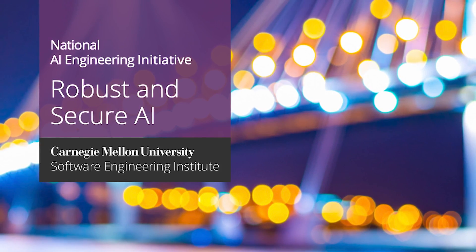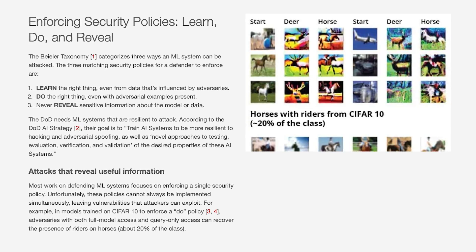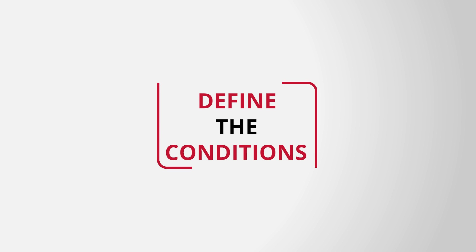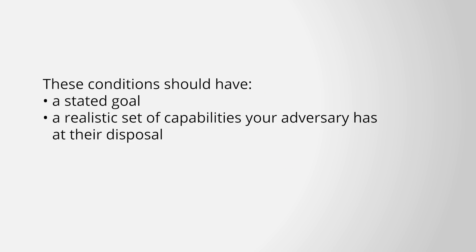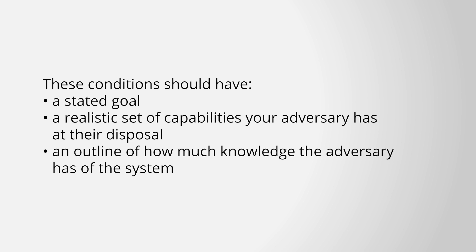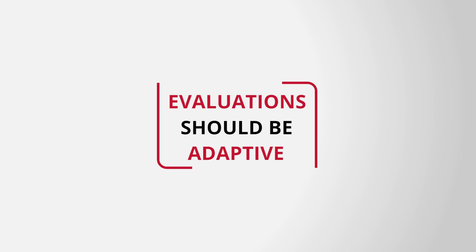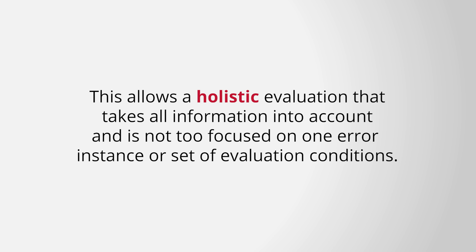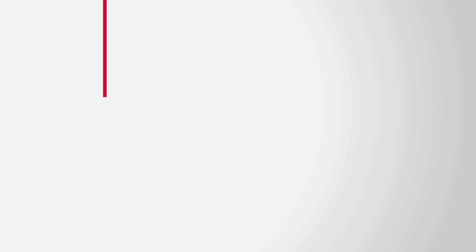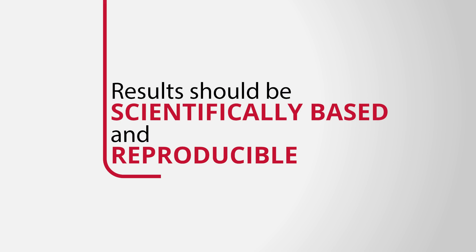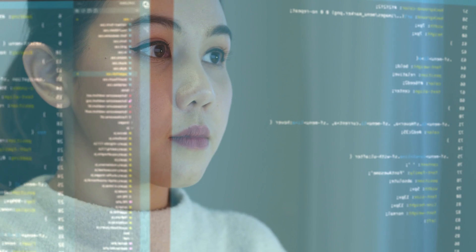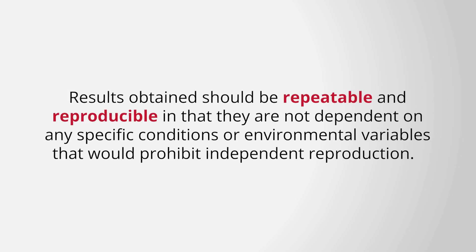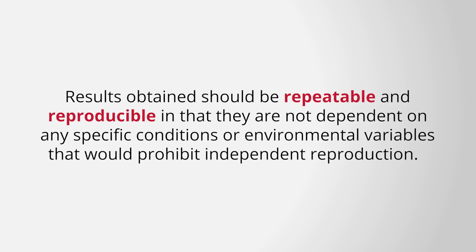The machine learning community has started to outline conditions and methods for performing robustness evaluations. First, define the conditions under which the defense or adversarial evaluation is to operate — including a stated goal, a realistic set of adversary capabilities, and an outline of how much knowledge the adversary has of the system. Second, evaluations should be adaptive, meaning each evaluation builds upon prior ones but remains independent and represents a motivated adversary, allowing a holistic evaluation that isn't too focused on one error instance. Lastly, results should be scientifically based and reproducible — researchers should be skeptical, vigilant in proving results are correct, and ensure results are repeatable and not dependent on specific conditions or environmental variables that would prohibit independent reproduction.